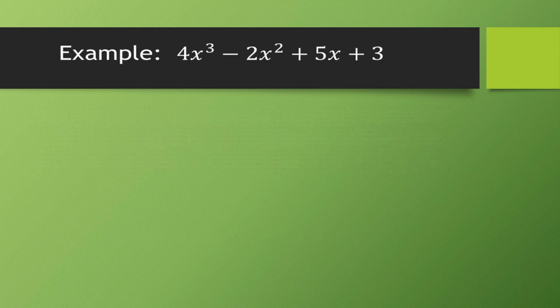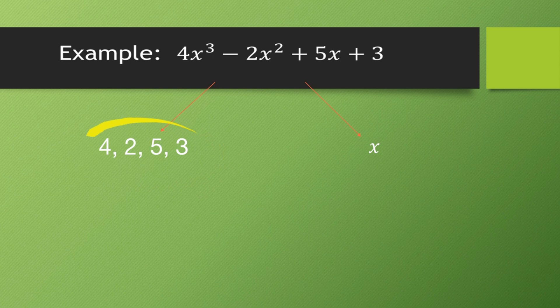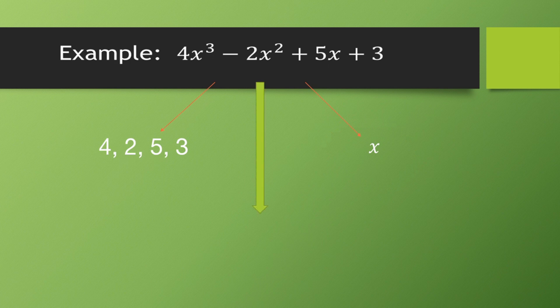Now, what are constants and variables? In the example, 4, 2, 5, and 3 — the value of these symbols is fixed, so they are called constants. The value of x, however, is not fixed; you can assign x the value 2, 3, 4, or any number of your choice. A symbol that may be assigned different values is called a variable.